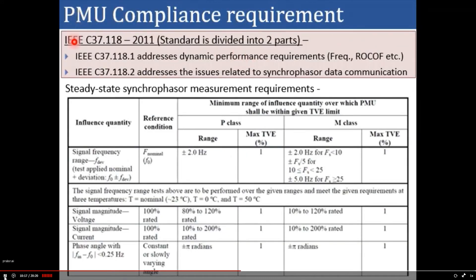As per C37.118-2011, the standard is divided into two parts: IEEE C37.118.1, which addresses dynamic performance requirements such as frequency and rate of change of frequency; and IEEE C37.118.2, which addresses issues related to synchrophasor data communication. Now let's talk about the steady state synchrophasor requirements.